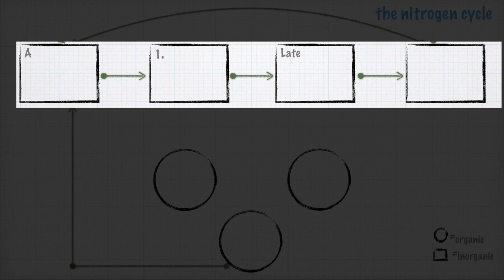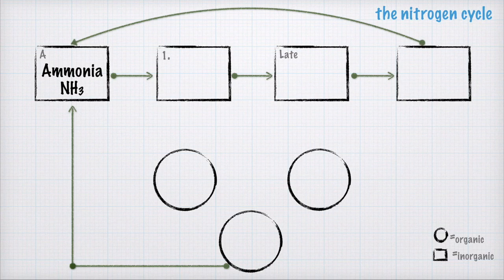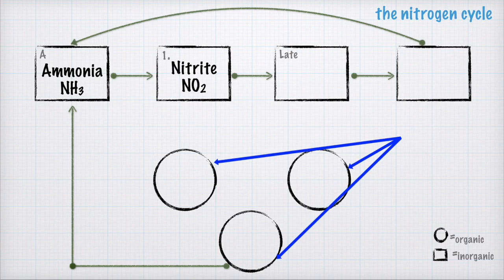In the very first box, A, you're going to write ammonia NH3. That's the first inorganic compound we run into. Remember, nitrogen is found inside the soil and also in the air. The organic organisms are designated by the circles at the bottom.